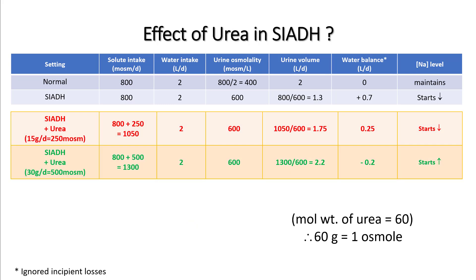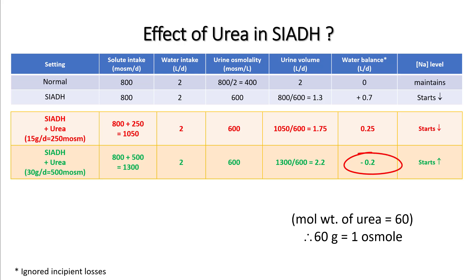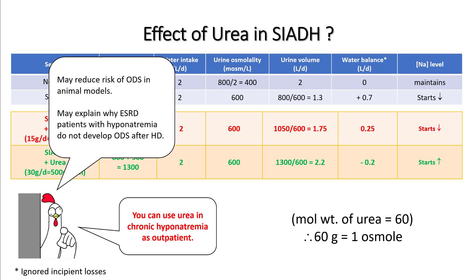Urea can be used for the same purpose. The molecular weight of urea is 60, so 60 grams equals 1 osmol. Giving 30 grams of urea per day equals 500 mOsm, producing 2.2 liters of urine and resulting in a negative water balance. Urea has been shown to reduce the risk of osmotic demyelination syndrome in animal models, which may explain why ESRD patients with hyponatremia do not develop ODS after hemodialysis despite rapid sodium correction.